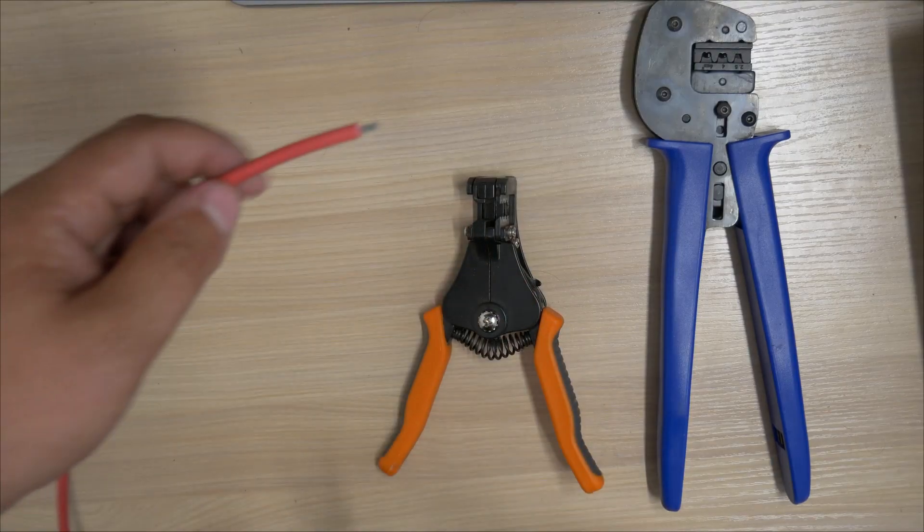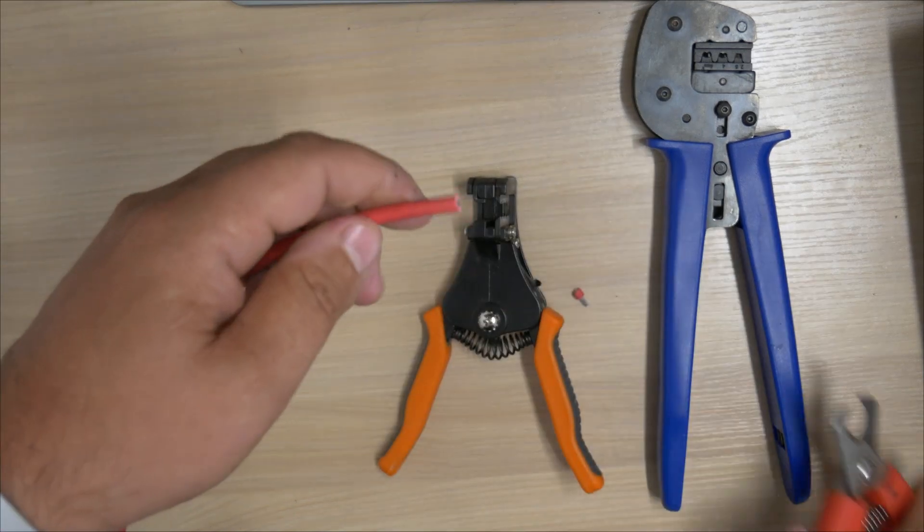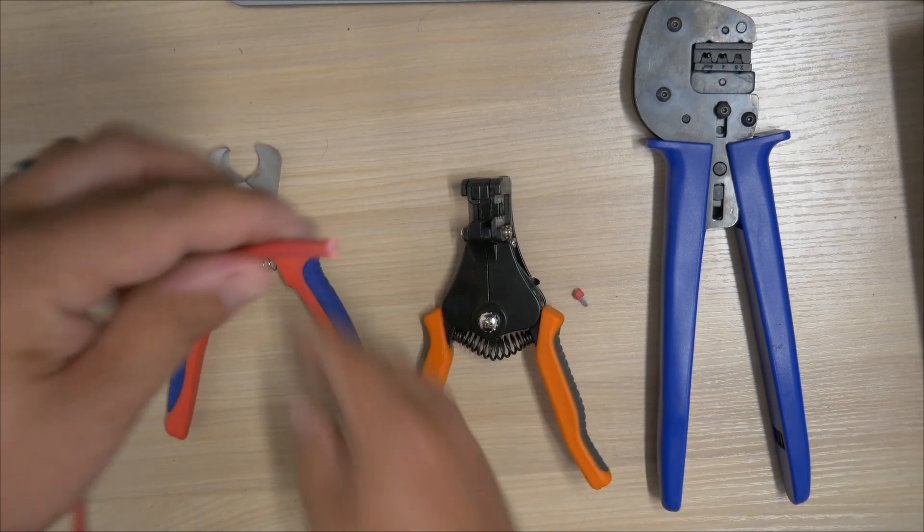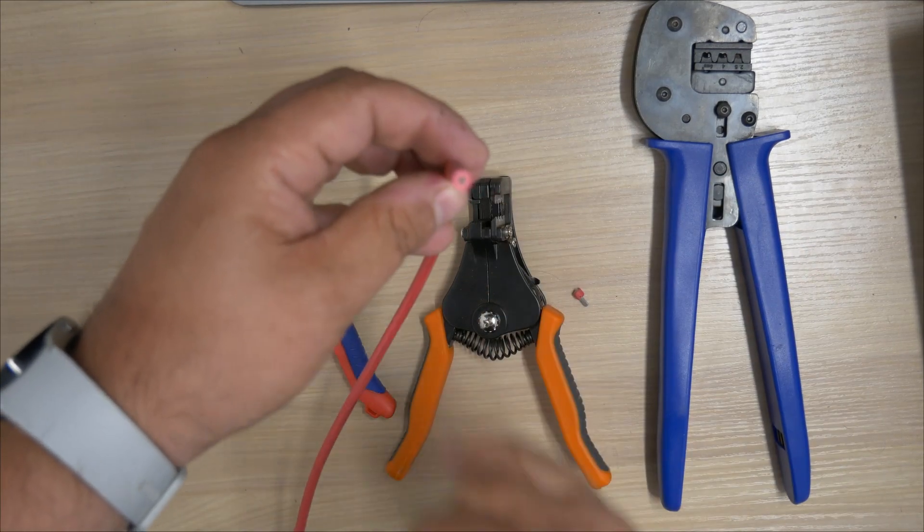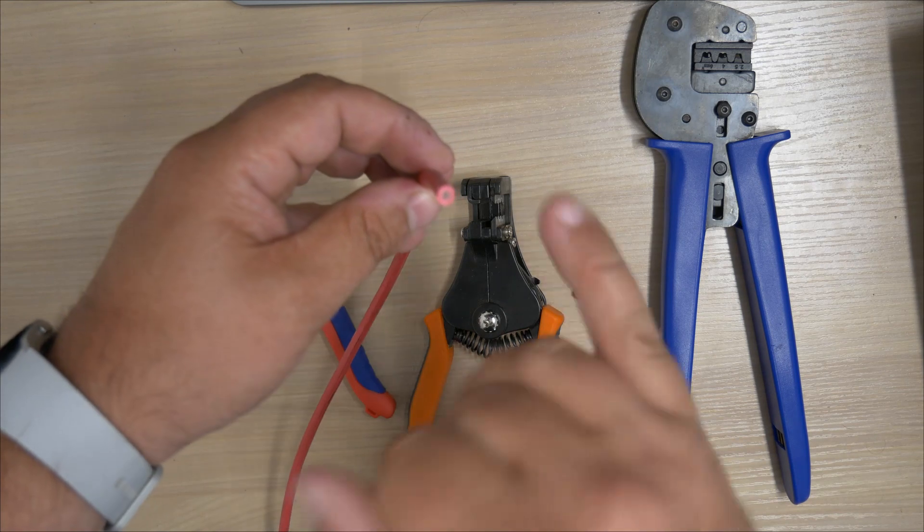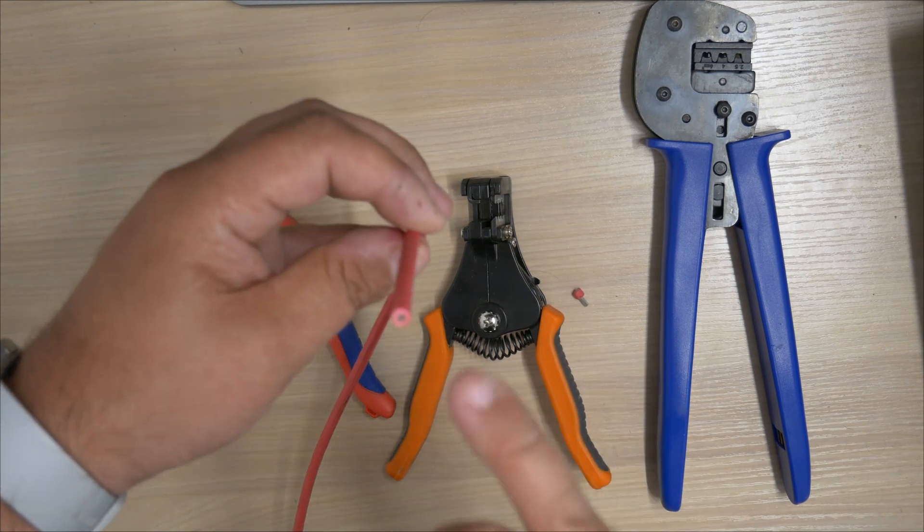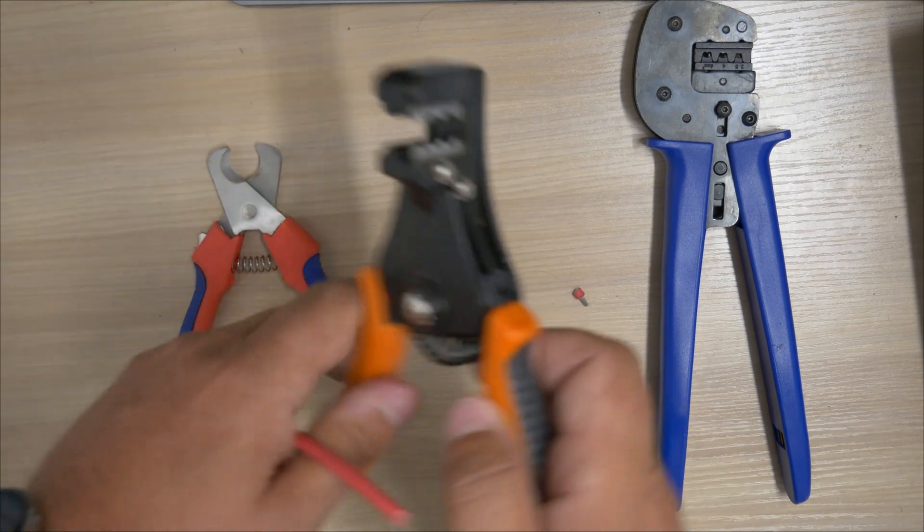So the first thing I like to do is ensure we've got a nice clean cut on the fresh end, that it is square as well, so it's not twisted to one side. These are fine stranded cables and they are double insulated. There is an outer red insulation and an inner insulation on this cable as well.